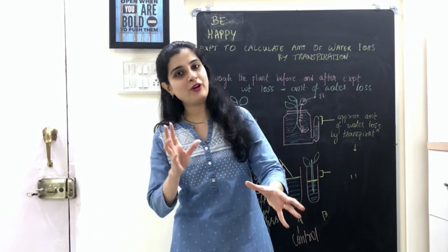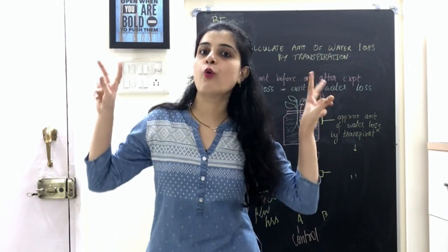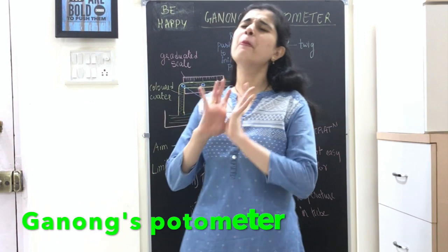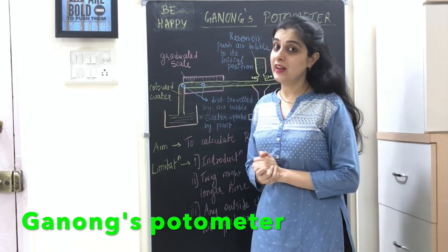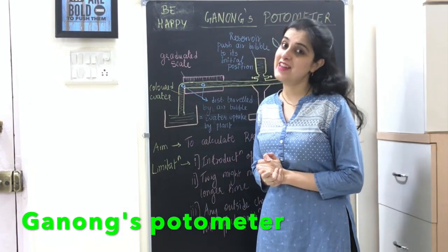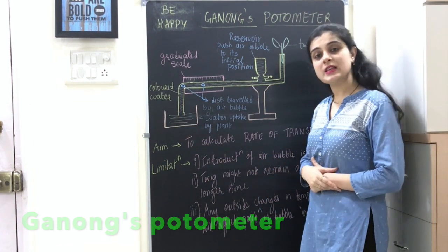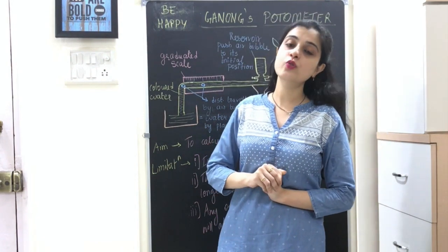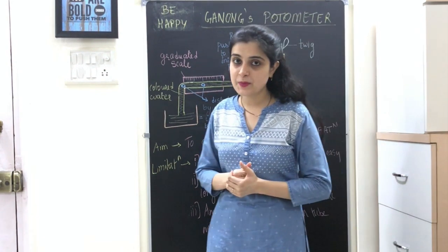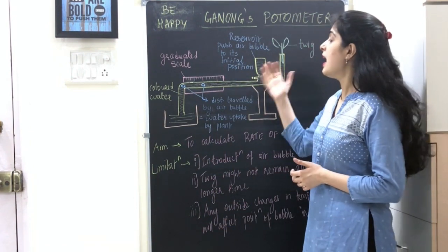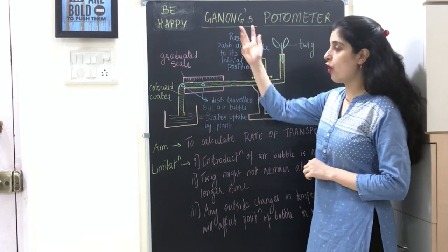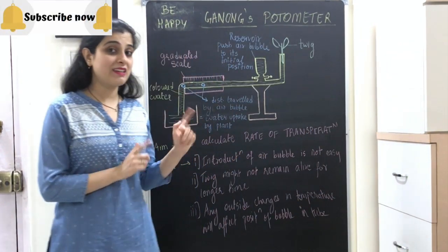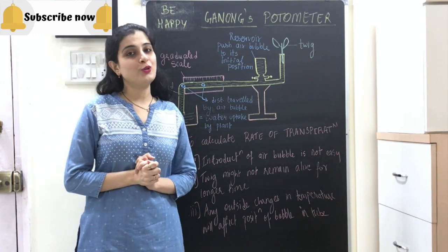Now comes the most important experiment of the chapter: Ganon's Potometer. This apparatus has appeared many times in board exams. The apparatus is called a potometer. The apparatus used to calculate the rate of transpiration is called a potometer, and the scientist who designed it is Ganon — hence Ganon's Potometer.